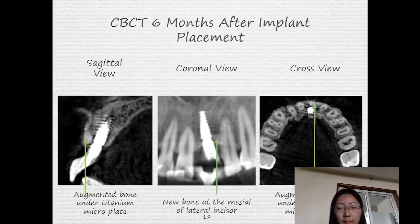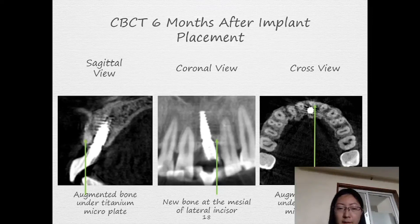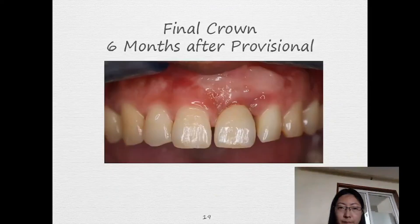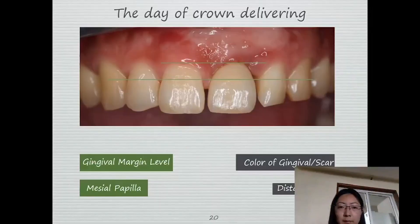Another CBCT analysis is performed. We can see the augmented bone under the titanium micro plate. Of course, here we have already removed the micro titanium plate, but still we can see the new bone formation — it is inspiring to see the new bone at the mesial of the lateral incisor. This is the final crown and the smile.